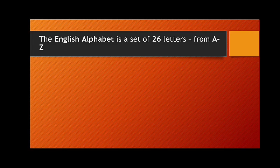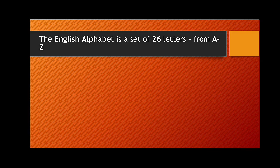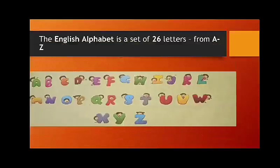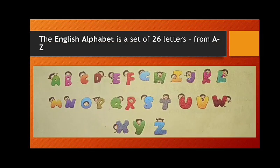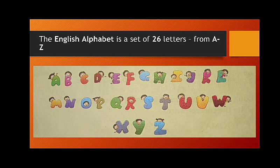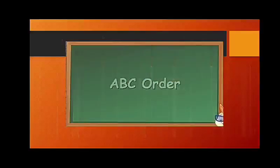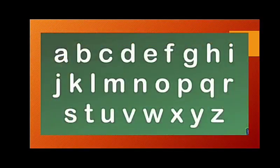The English alphabet is a set of 26 letters, from A to Z. This is the alphabetical order of English letters. Let us see the ABC order children.